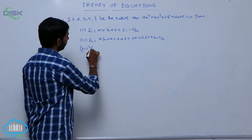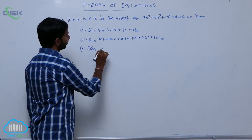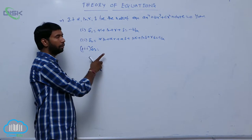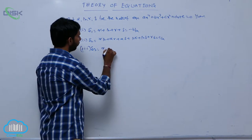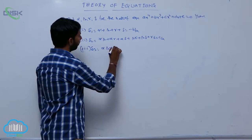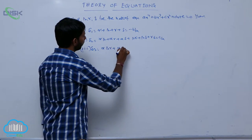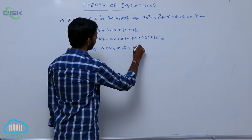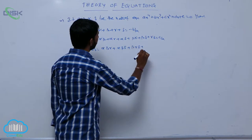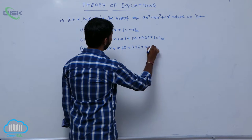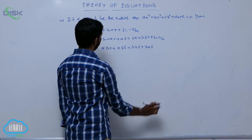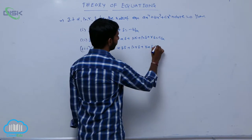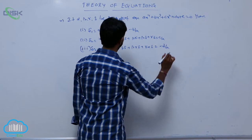S3 is equal to the sum of product of roots taken three at a time. It is alpha·beta·gamma + alpha·beta·delta + beta·gamma·delta + gamma·alpha·delta, which is equal to minus D by A.